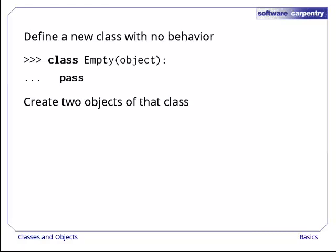Now that we have a class, let's create two objects of that kind. We do this by calling the class's name as if it was a function. Each time we do this, Python goes and creates a new object of that class. We can assign those objects to variables to keep track of them, just as we've been assigning things to variables all along.